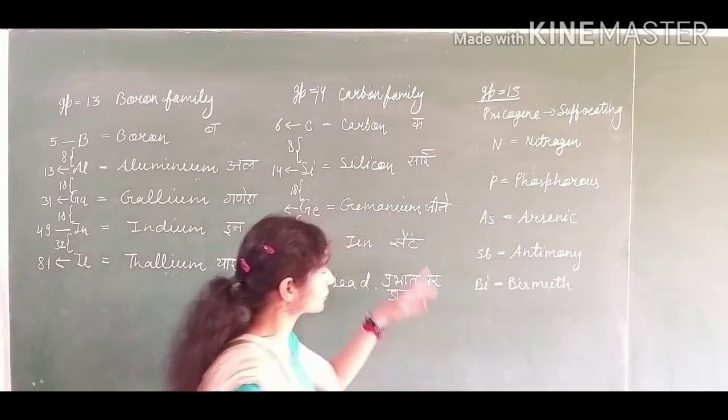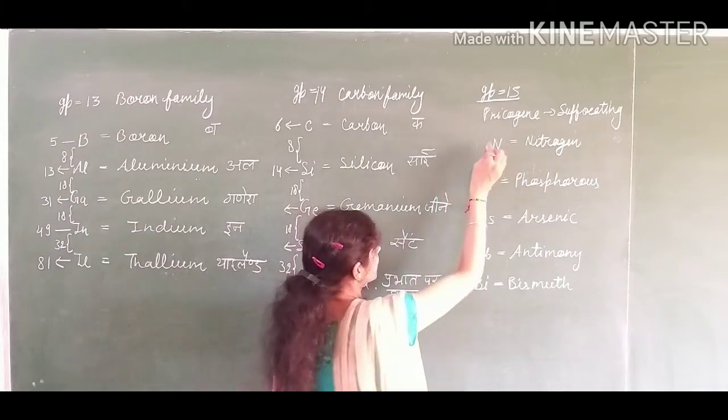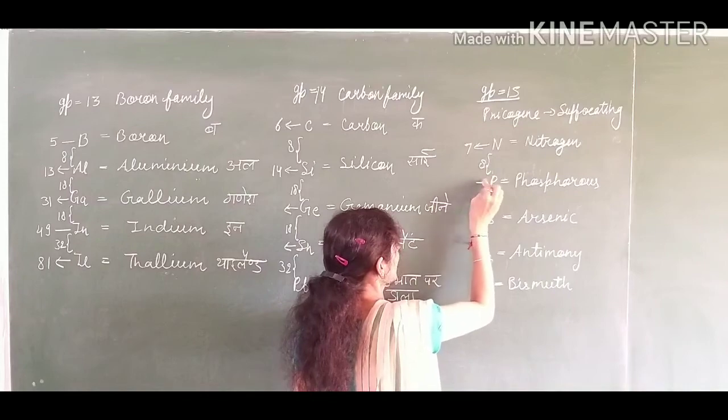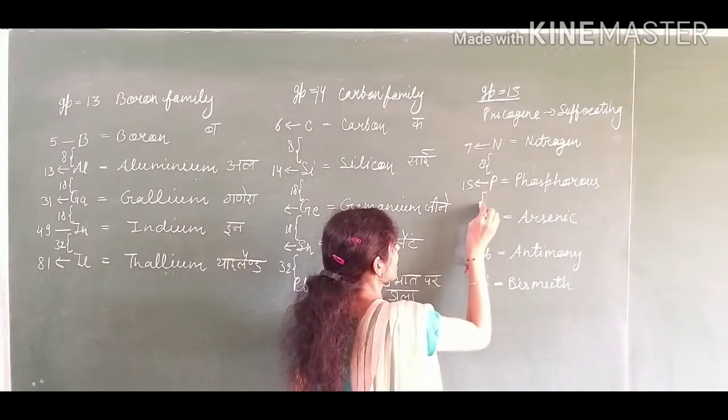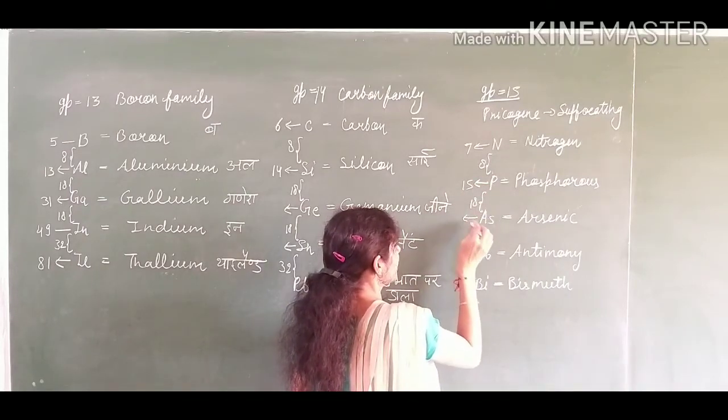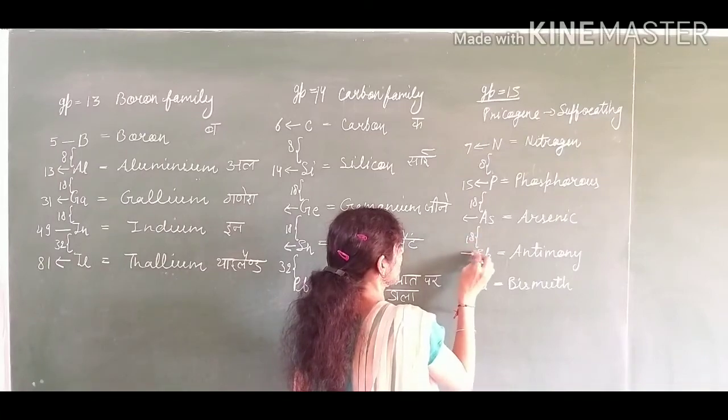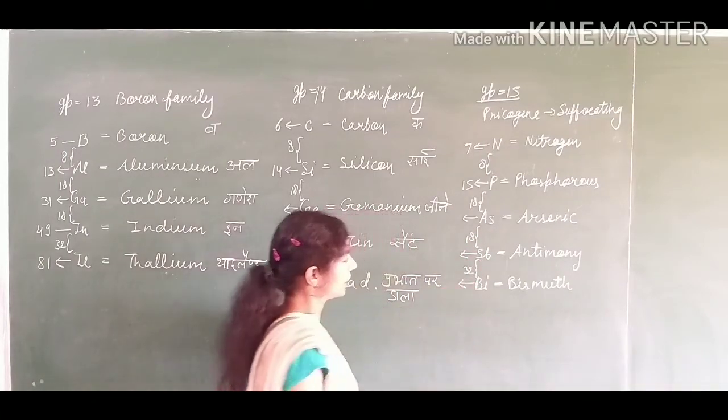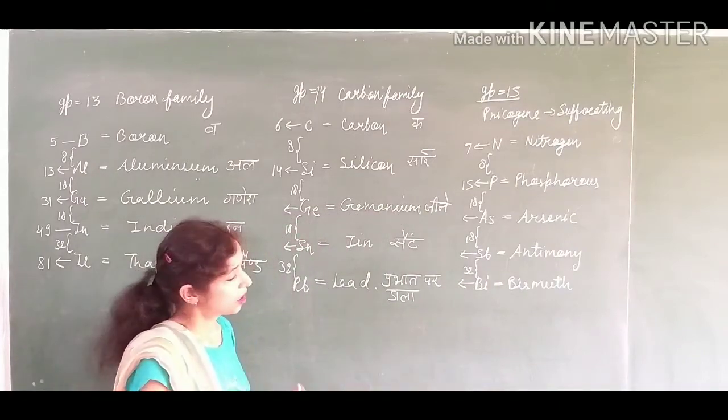How to find out their atomic number? Nitrogen atomic number is 7. 8 is to be added, it becomes 15. Now 18 is to be added. Again 18 is to be added to find out the atomic number. And at last 32 is to be added to find out the atomic number of bismuth.